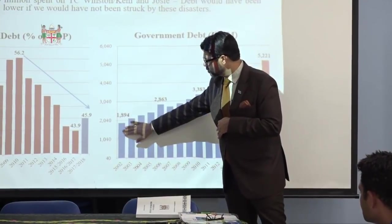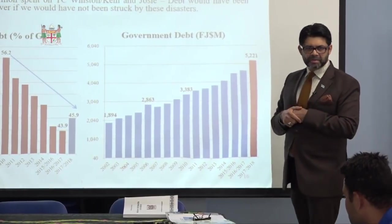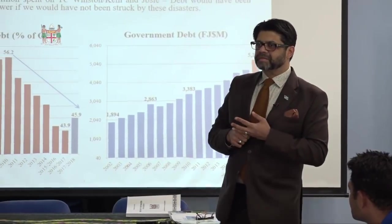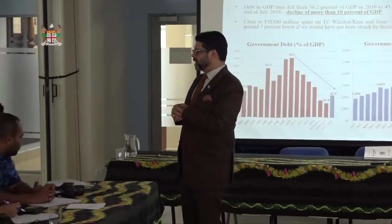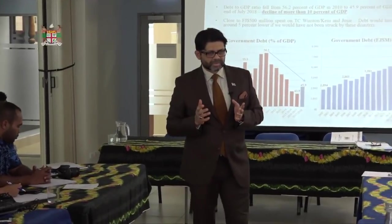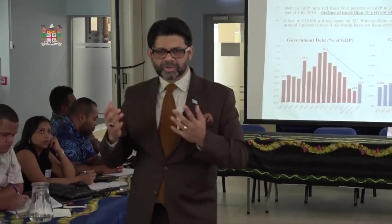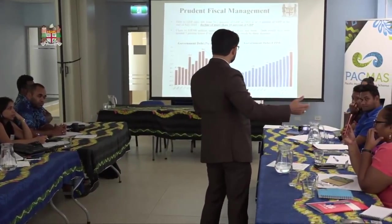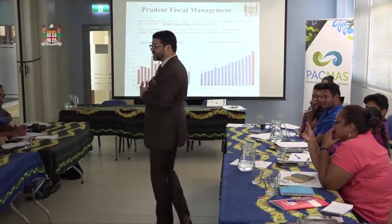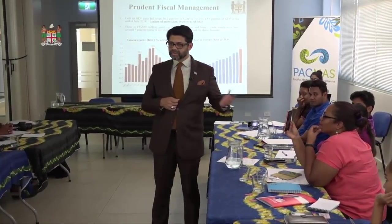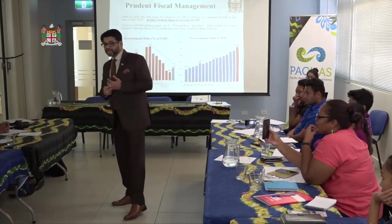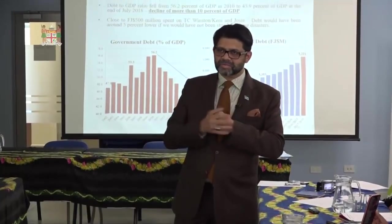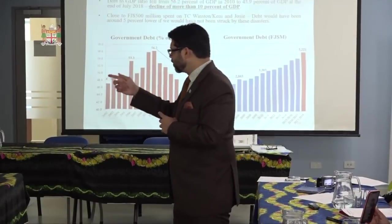The dollar value of the debt was $1.8 billion in 2002 and is now $5.2 billion, but as a percentage of GDP it's come down — we've become richer. Imagine Aliki earns $100 a week and borrows $20 — his debt to GDP ratio is 20%. But if she earns $500 and has a debt of $50, that's two and a half times more dollar value, but only 10% of income. Who is better off?